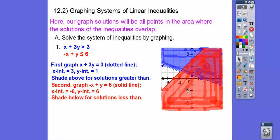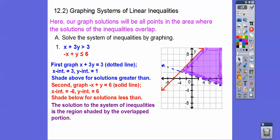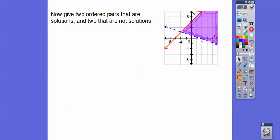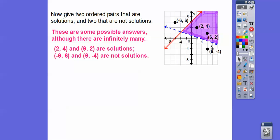Our answer is the intersection of the blue and the red — that's the purple region. All of these points in here satisfy this system of inequalities. All of the points out here wouldn't satisfy either one or both of them. Your book might ask you to give a couple of ordered pairs that are solutions and ordered pairs that aren't. For solutions, pick any points in the overlapping region; for non-solutions, pick any points outside. There are infinitely many points you can pick.